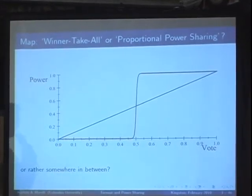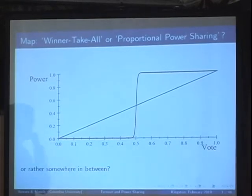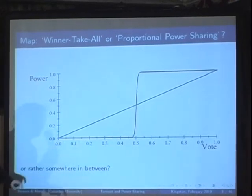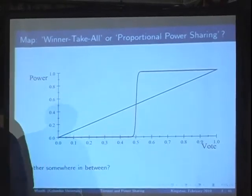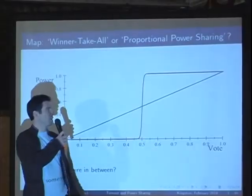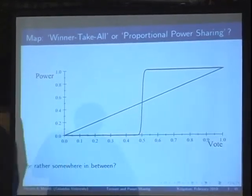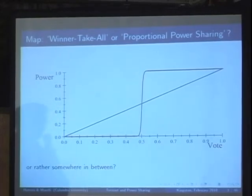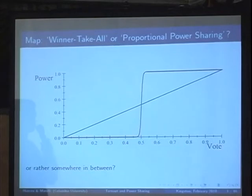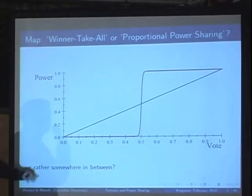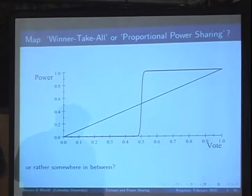Most models have looked at a plurality winner-take-all system, where the vote-share-to-power-share mapping looks like this red line: if you get 49.9% of the vote you get zero power, and if you get 50.1% you get 100% of the power. You get the same power whether you have 70% or 50.1% of the vote. We want to see what happens with more power sharing — something more gradual, like this straight line, which is a proportional mapping between vote share and power share. The benchmarking model has always been this winner-take-all plurality.